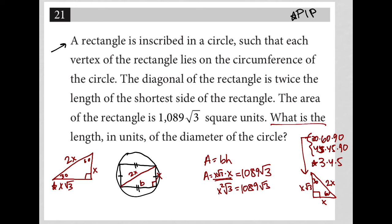What is the length in units of the diameter of the circle? Yes, I'm trying to solve for 2x. So I need to find out what X is. In my effort to figure out what X is, I'm going to isolate X by dividing by square root 3 on both sides.